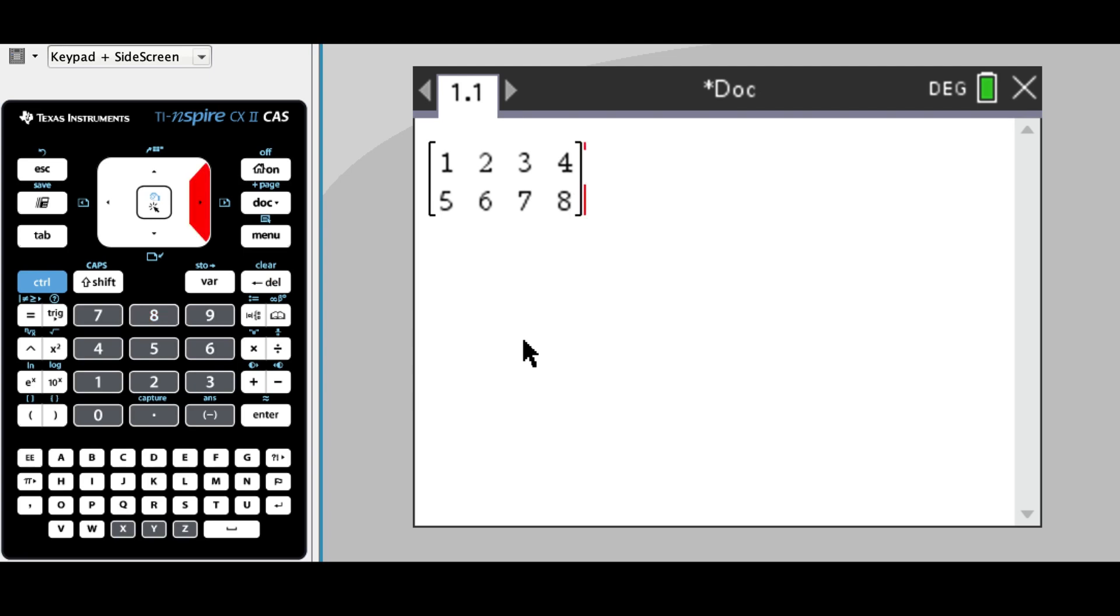Once we've entered our matrix, we can give it a name. We're going to press the control button and var—you'll notice that in blue above it is the store button—and we can give it a name. Usually we just call it a letter. All we have to do now is press enter and the CAS will say that yes, I know that this particular matrix is called 'a'.